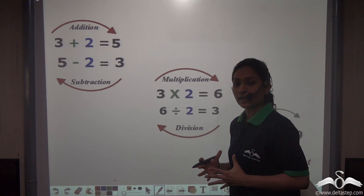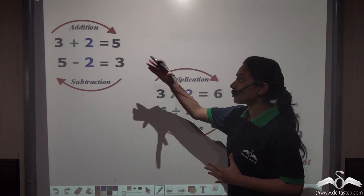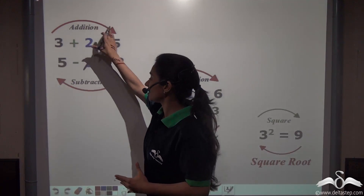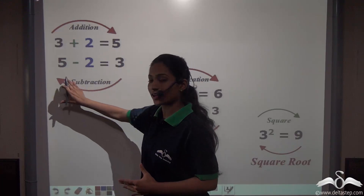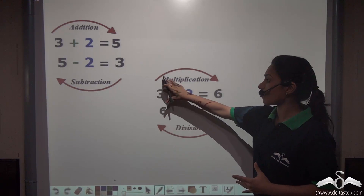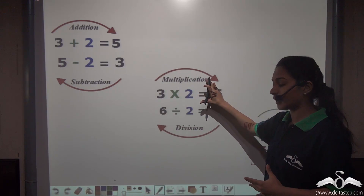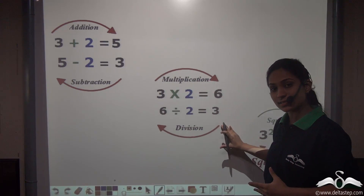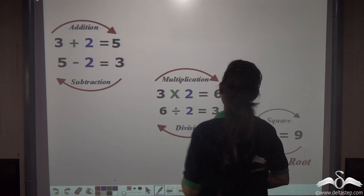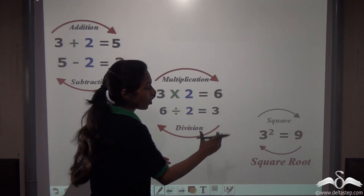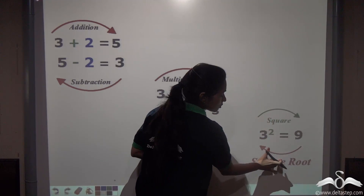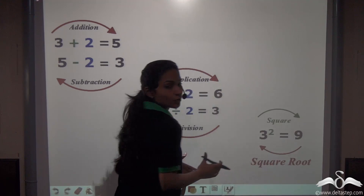We know that the inverse operation of addition is subtraction. Similarly, the inverse operation of multiplication is division, and the inverse operation of a square is called the square root.